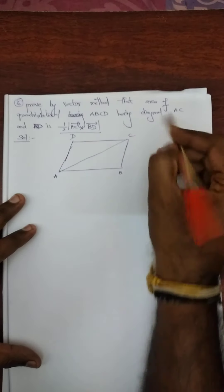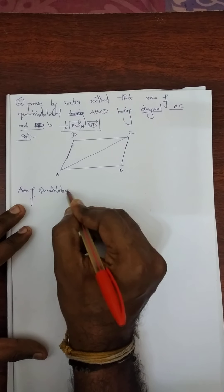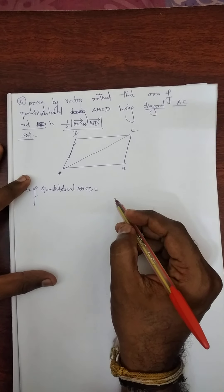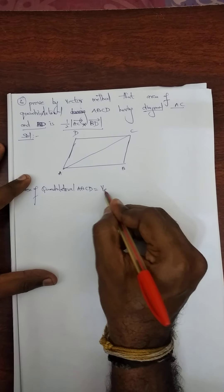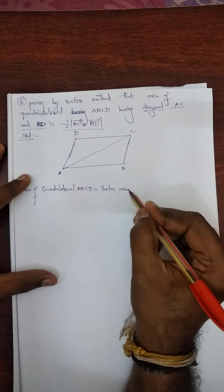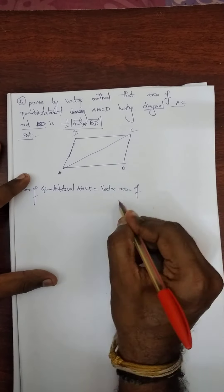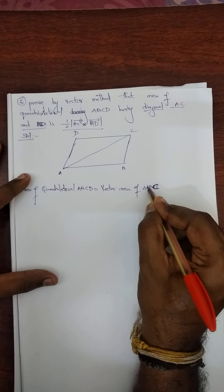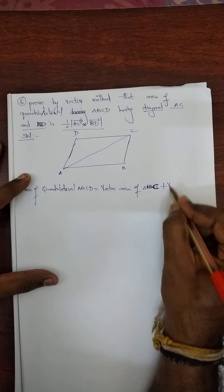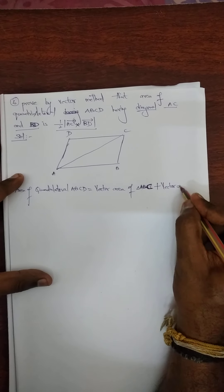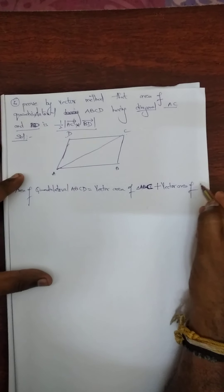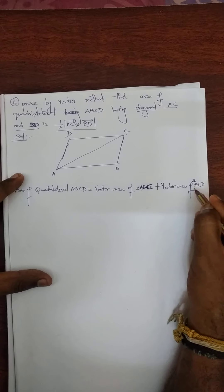Therefore, see the formula. Area of quadrilateral ABCD is equal to — listen, probably this is a formula — area of quadrilateral ABCD is equal to vector area of triangle ABC plus vector area of triangle ACD.